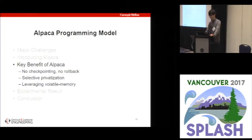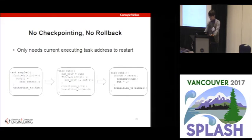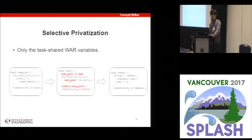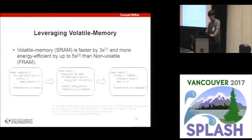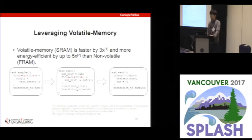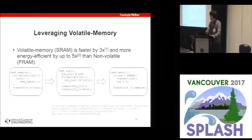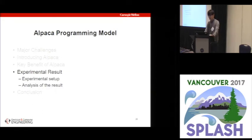To summarize the key benefits of ALPACA: first, we don't rely on traditional checkpointing or rollback, so there is no overhead of copying the entire stack, register file, or memory. Second, our compiler selectively privatizes only the minimal set needed to maintain correctness, incurring minimal overhead. Third, we can leverage volatile memory — task-local variables can remain volatile — whereas some previous works require the entire memory to be non-volatile. In current technology, volatile memory is much faster and more energy-efficient than non-volatile counterparts.